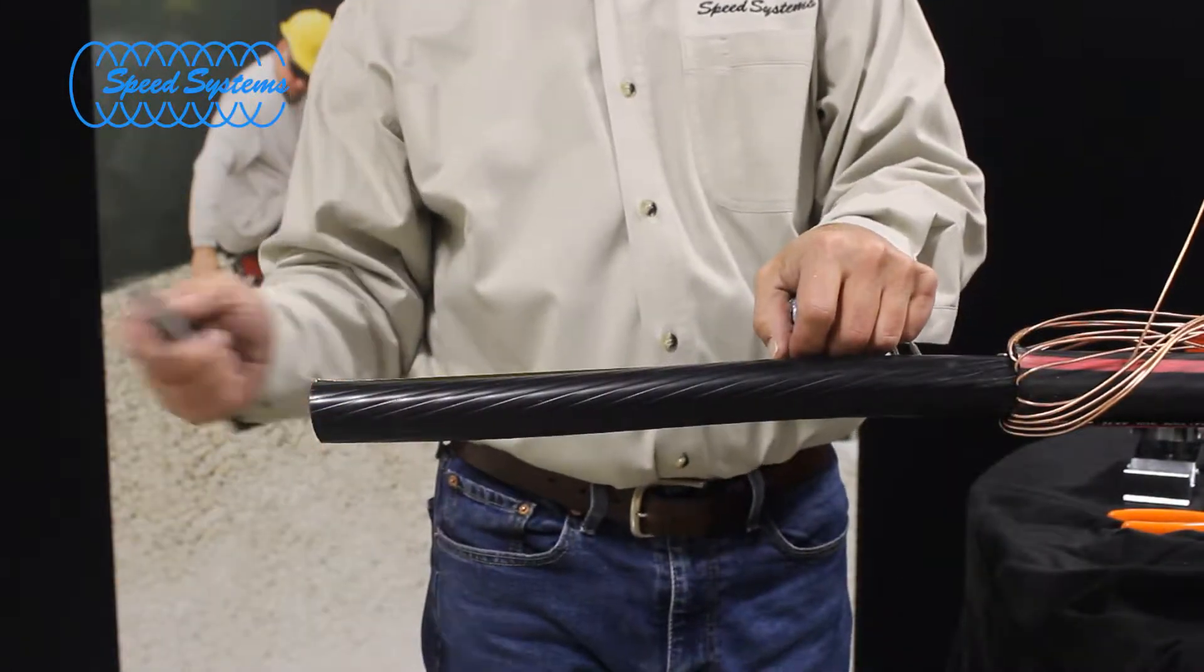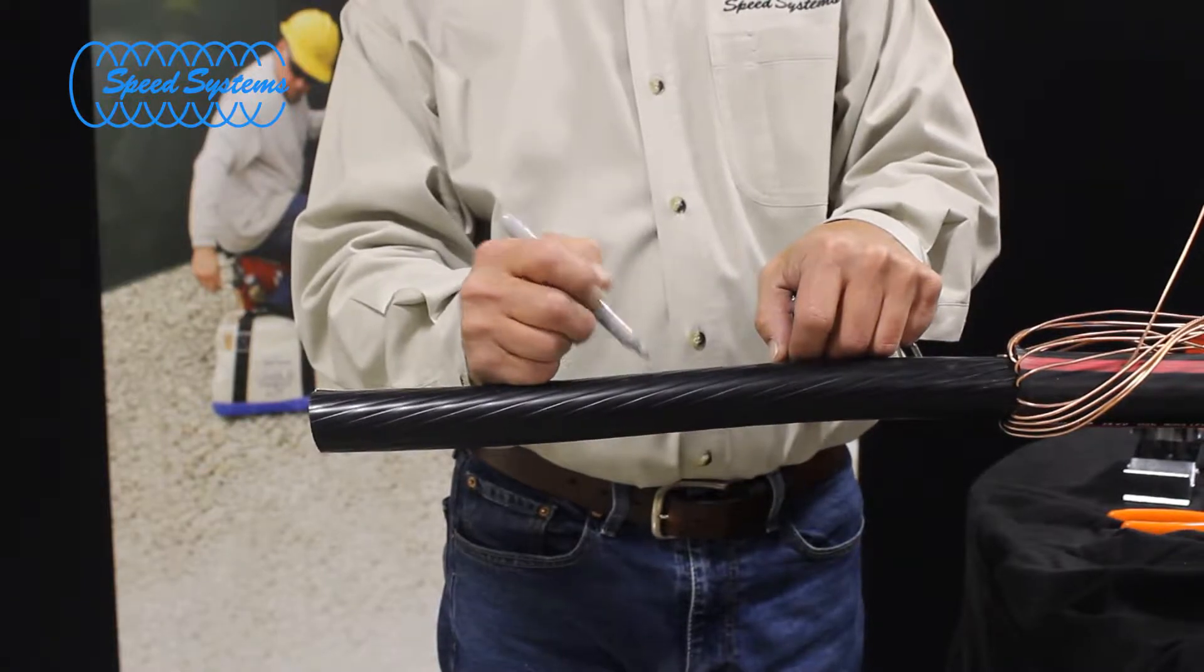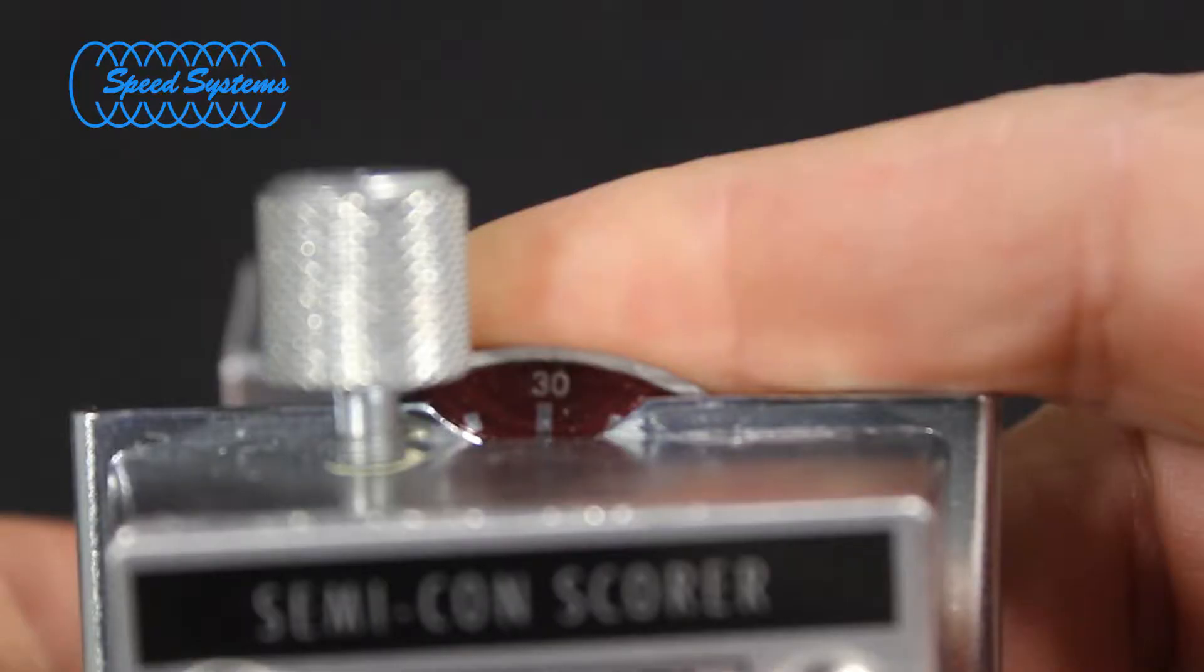Measure and mark the Semicon strip back according to the manufacturer's instructions. Set the Semicon scorer blade depth to cut through most of the Semicon layer without cutting completely through to the insulation.